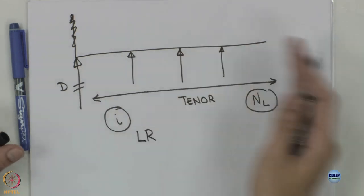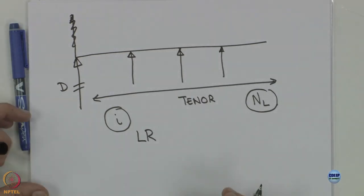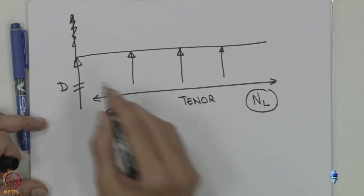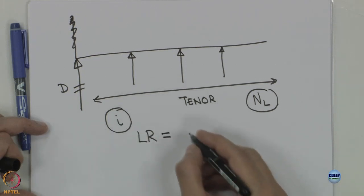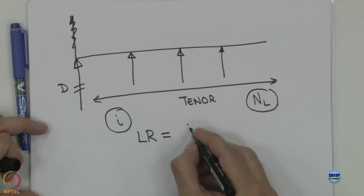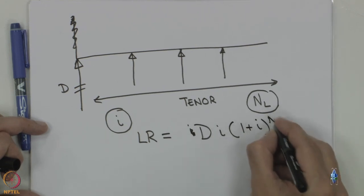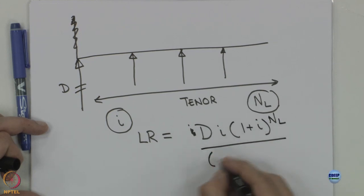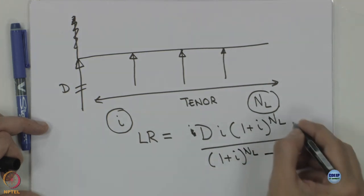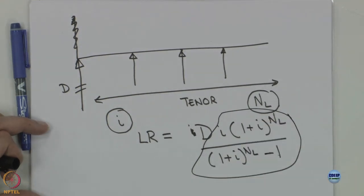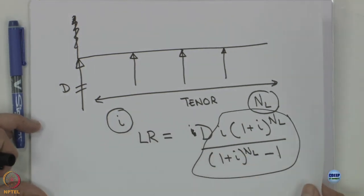There could be loans where different amounts are paid in different years, but we convert it into an equivalent annual amount. This is similar to the capital recovery factor formula, but instead of D we use I, the interest rate. The formula is: Debt × I(1+I)^NL / ((1+I)^NL − 1). This annualization factor, multiplied by the debt, gives how much we repay annually.